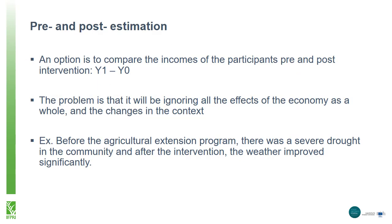To estimate the impact, there are a number of methods. One way is the simple comparison between the incomes of participants before and after the intervention. The problem is that we are ignoring other components that might have influenced incomes unrelated to the program. Using the example of agricultural extension, if there is a drought the previous year and in the year of the intervention there is sufficient rain, the harvest will be better and so will incomes for participants — but this change was independent of participation in the extension program.